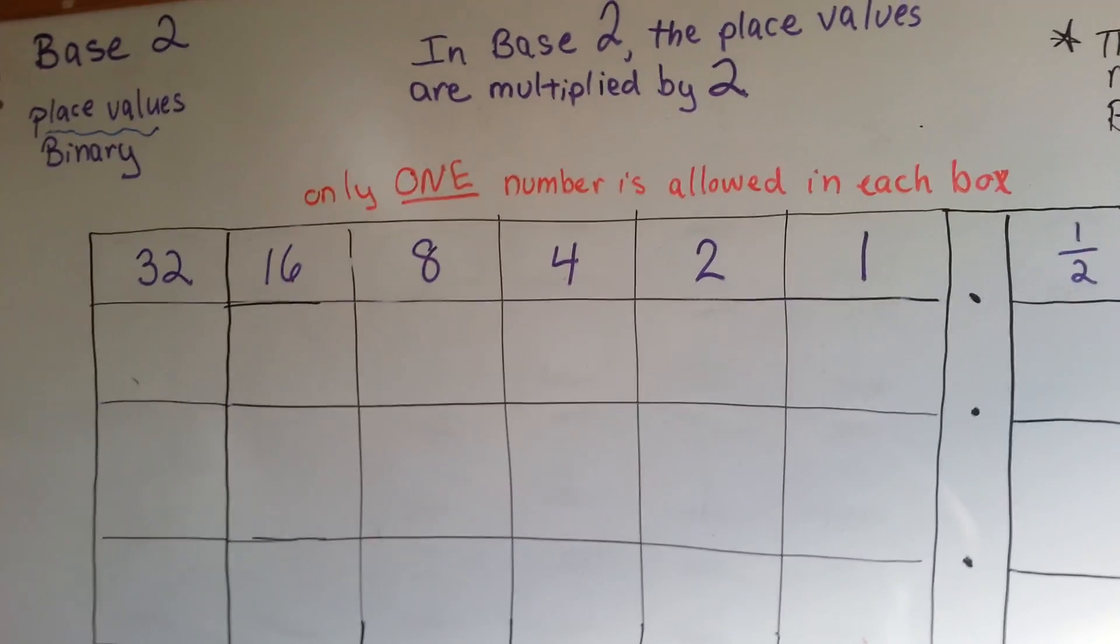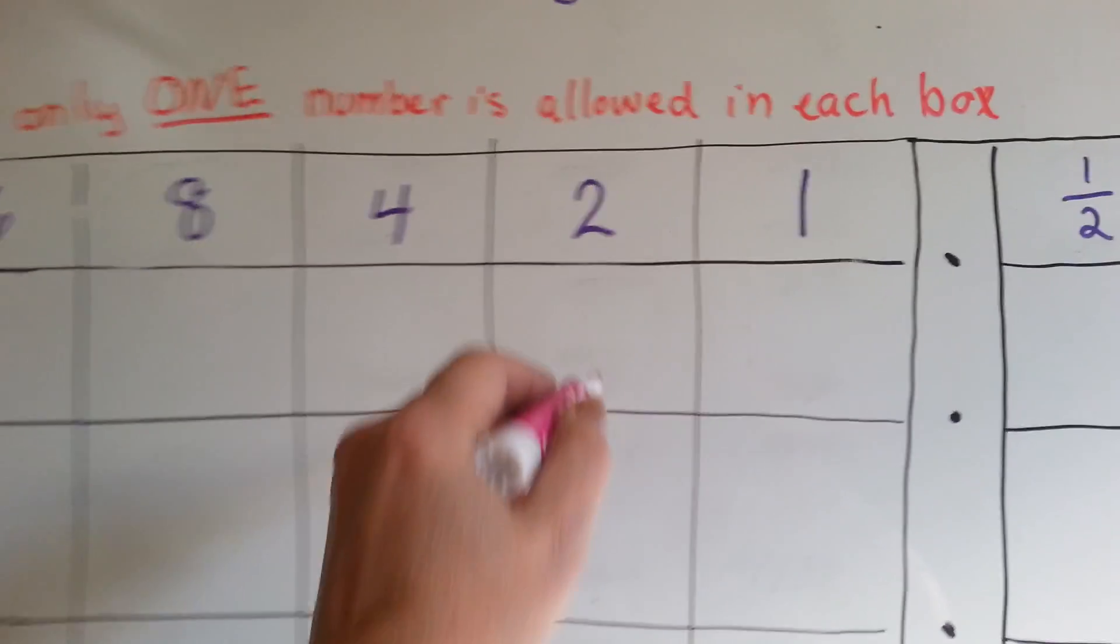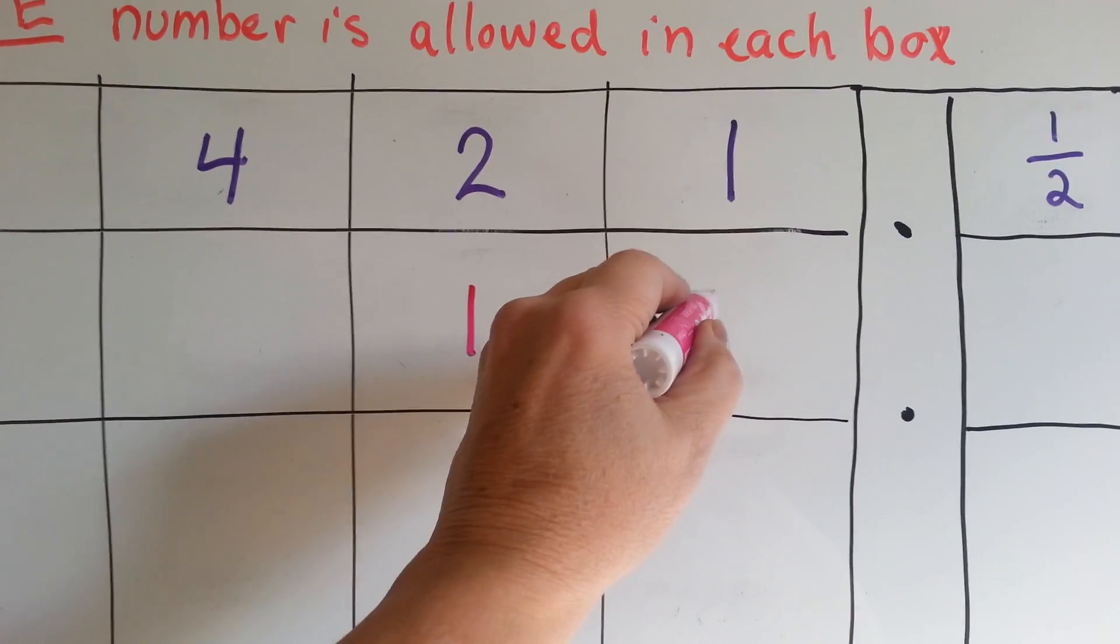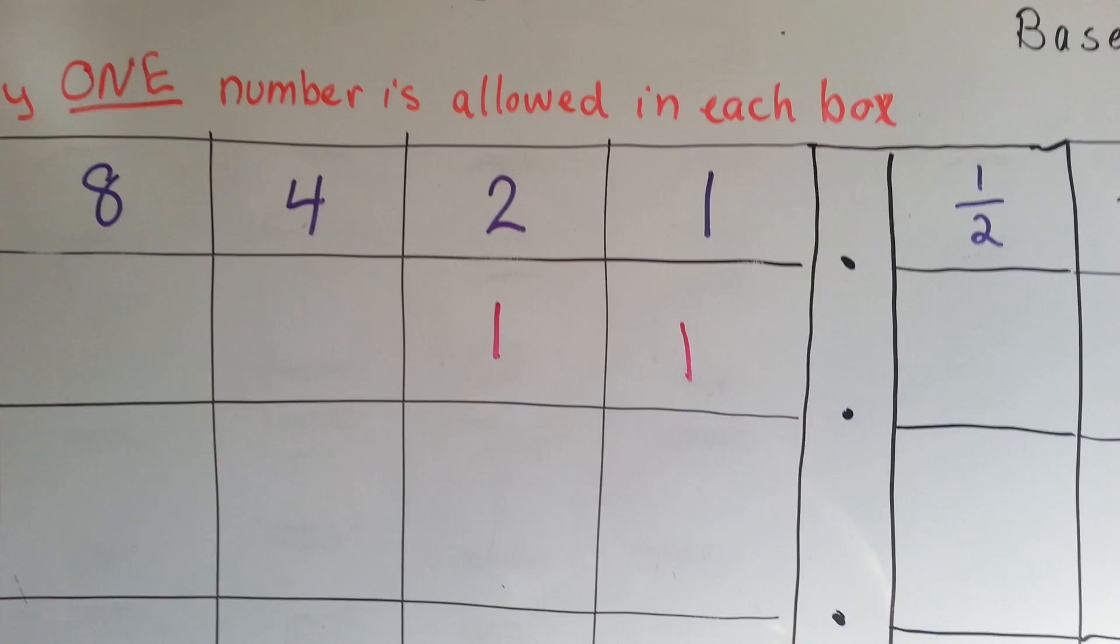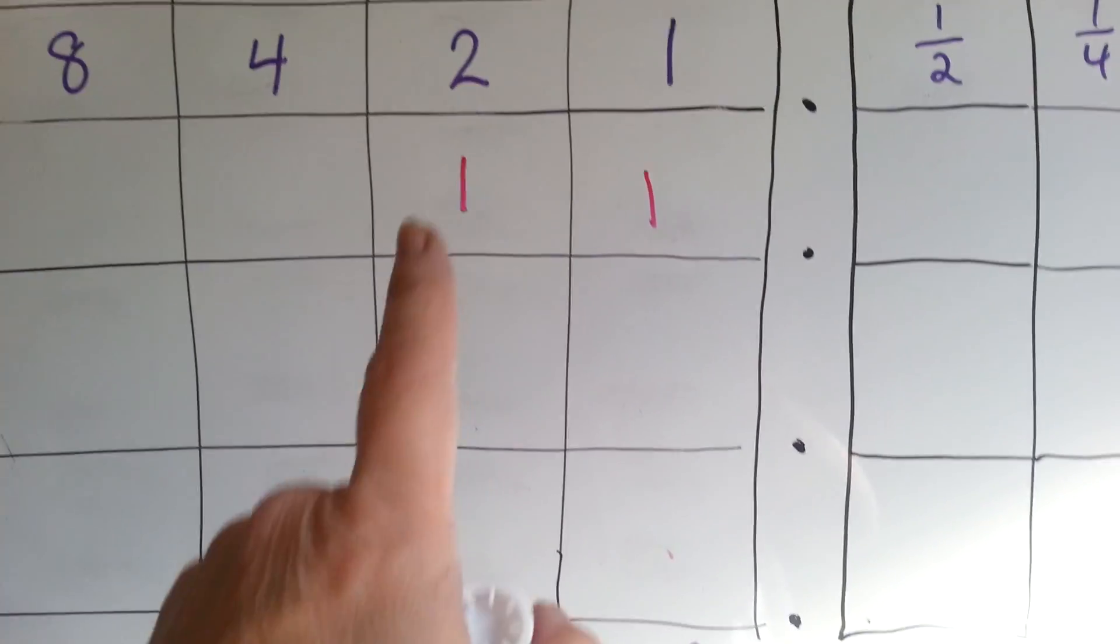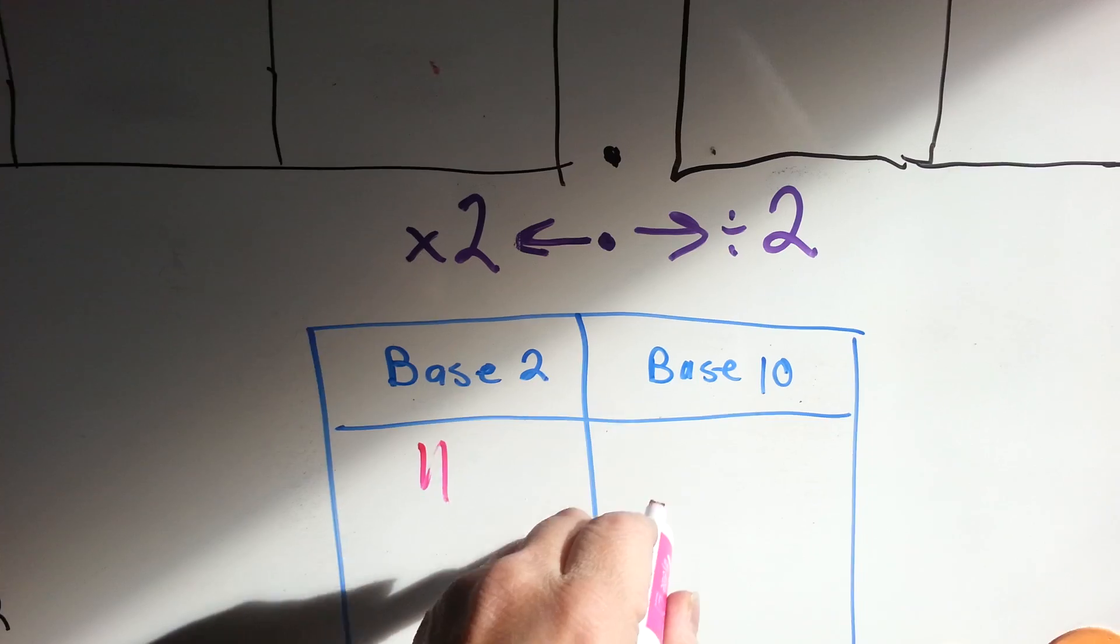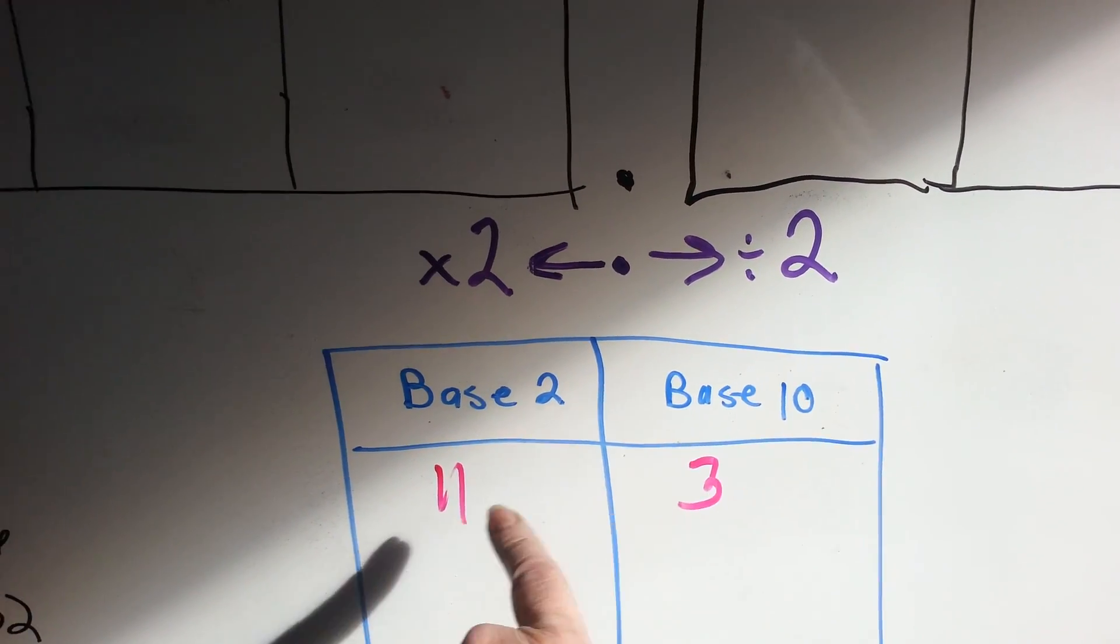If you wanted to write the number 3, you would have to say, I'm going to use 1 two and 1 one. That would give me the number 3, a 2 and a 1. So, 11 in base 2 is equal to 3 in base 10.